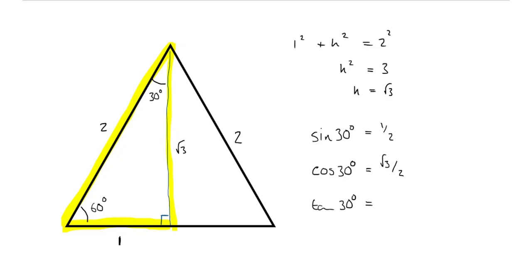And the same thing with tan 30. Tan is opposite over adjacent, so it's 1 divided by root 3. Another way of writing 1 upon root 3 is root 3 upon 3, because we're just rationalizing.